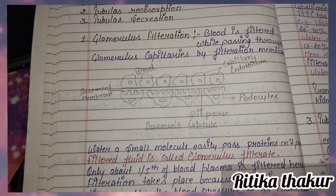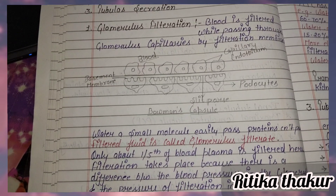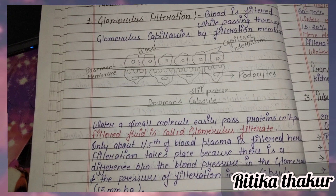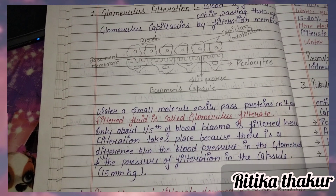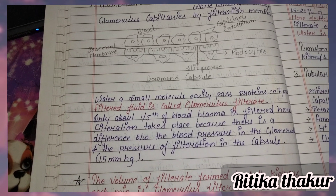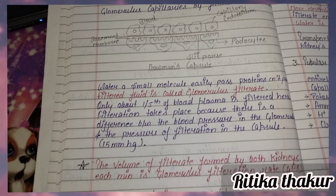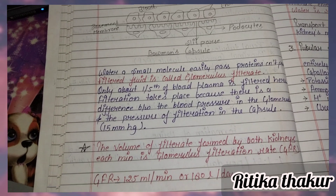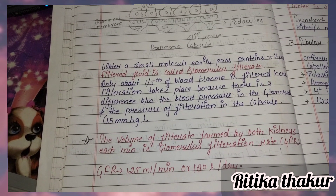Only about one-fifth of blood plasma is filtered here. Filtration takes place because of the pressure difference between blood pressure in the glomerulus and the pressure in the capsule, which is 15 mmHg. The volume of filtrate formed by both kidneys each minute is called the GFR (Glomerular Filtration Rate).